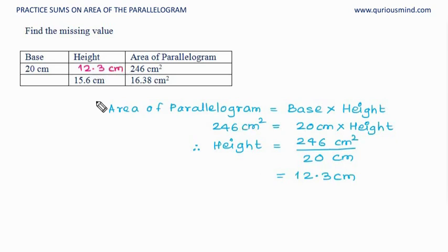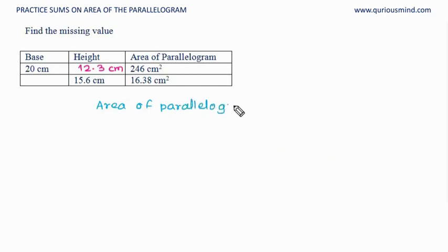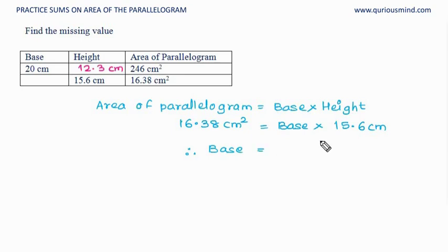Let's do the next one. Area of parallelogram is equal to base times height. Area is 16.38 cm square equals base—we need to find. Height is 15.6 cm. And therefore base would be equal to 16.38 cm square divided by, because this goes that side becomes divided by, 15.6 cm.